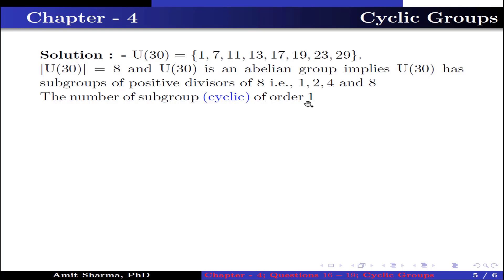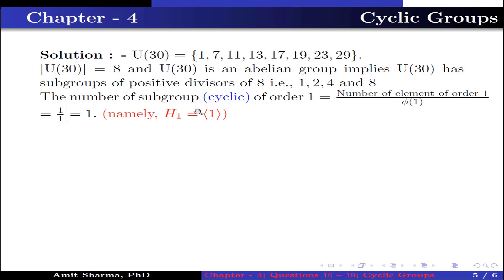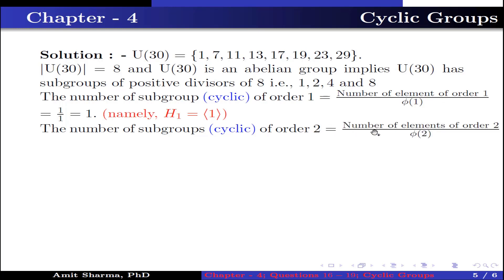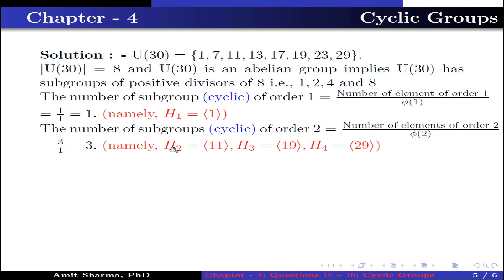The number of cyclic subgroups of order 1 equals the number of elements of order 1 divided by φ(1), which is 1/1 = 1. The subgroup is H1, generated by 1, the identity element. The number of cyclic subgroups of order 2 equals the number of elements of order 2 divided by φ(2), which is 3/1 = 3. The subgroups are H2 generated by 11, H3 generated by 19, and H4 generated by 29, because 11, 19, and 29 are the elements of order 2 in U30.